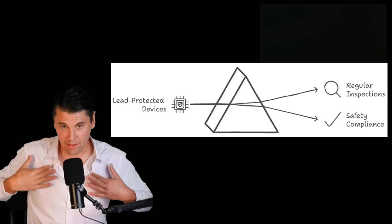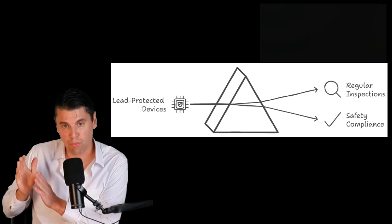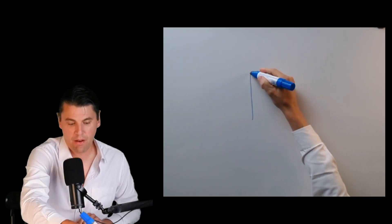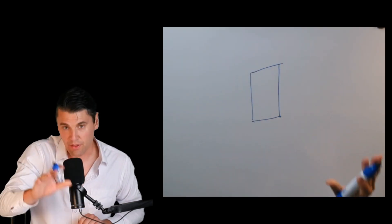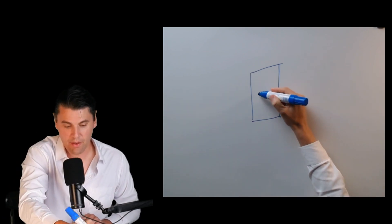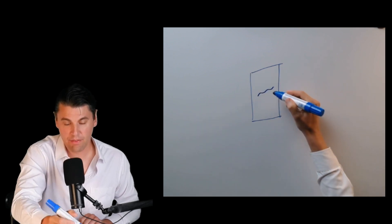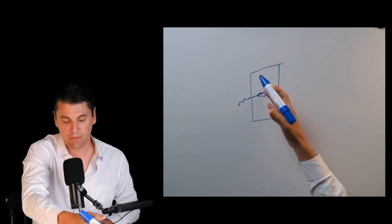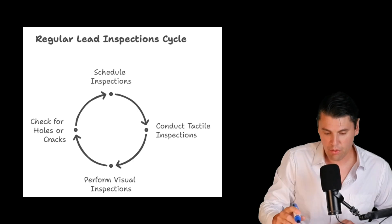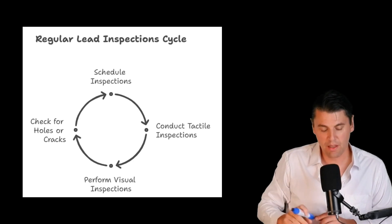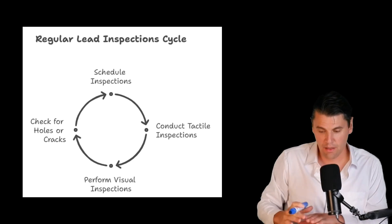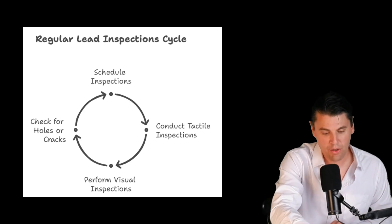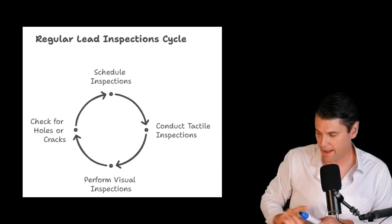Part of dealing with the lead protected devices is also to regularly be doing inspections on those devices. Because if you think about if you had a sheet of lead that was your primary protective device and there was a crack in that sheet of lead or a hole in that sheet of lead, that actually could preferentially let x-rays pass through that crack. You want to regularly be doing inspections of your lead, tactile and visual inspections in order to make sure that you do not have actual holes or cracks within your lead.